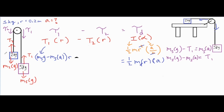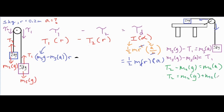For the two kilogram block: T2 is the driving force because the five kilogram block is tugging it upward, counteracted by its own weight m2·g, so T2 minus m2·g equals m2·a. Solving for T2 gives T2 equals m2·g plus m2·a. We substitute this into the torque two term: T2 times r becomes (m2·g plus m2·a) times r.